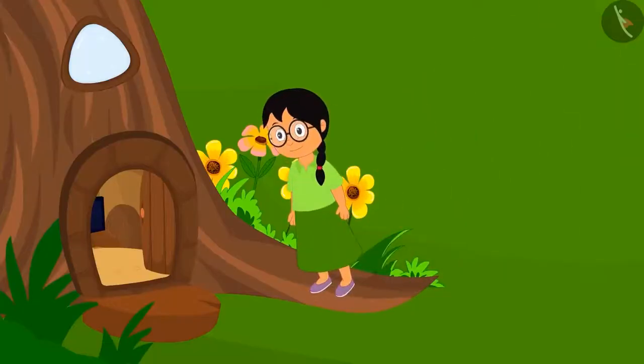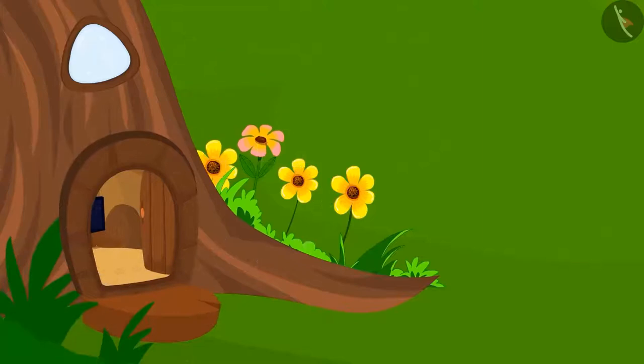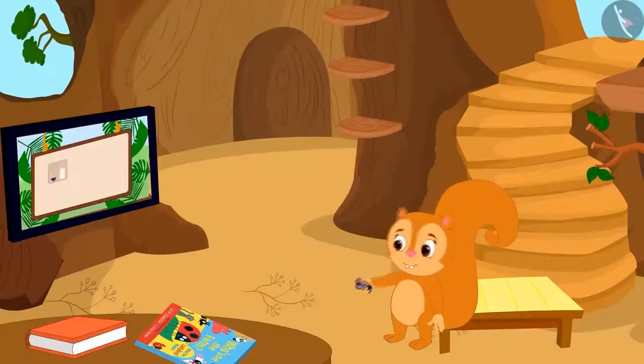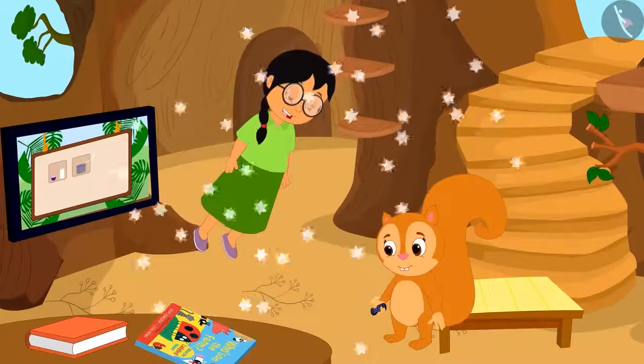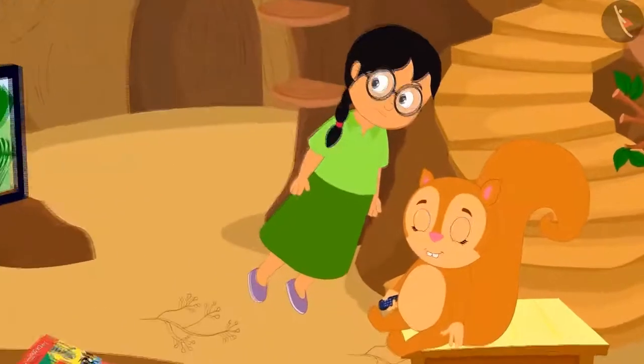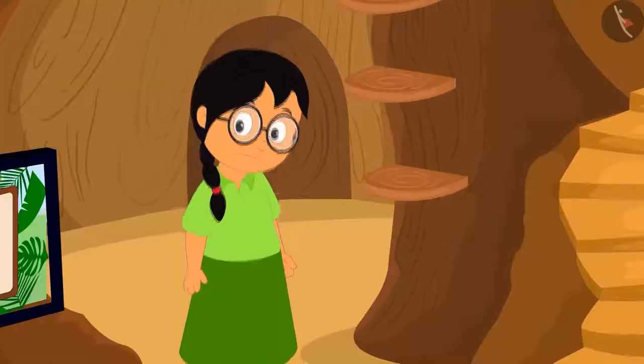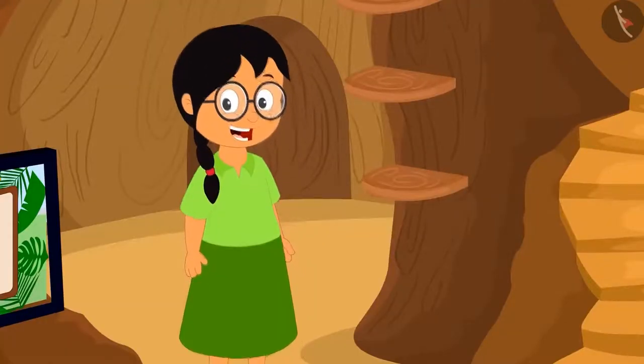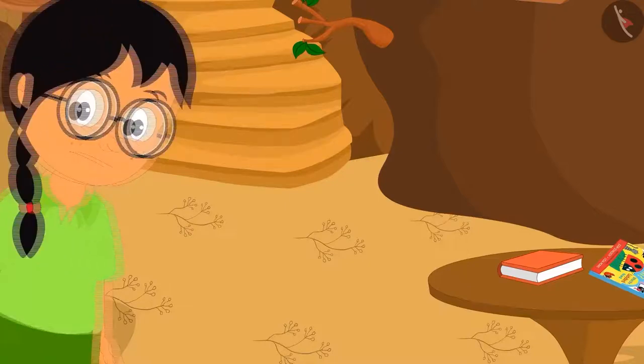She flies into Chanda Squirrel's house. Chanda is watching TV. But what is this? Chanda cannot see her. Minoo is very happy to know that she cannot be seen. She made this type of pattern on Chanda's TV.